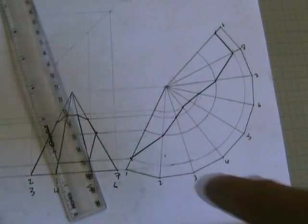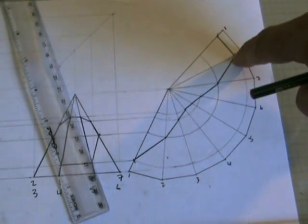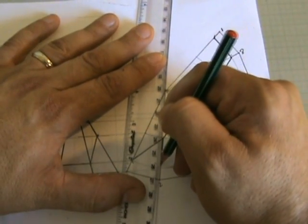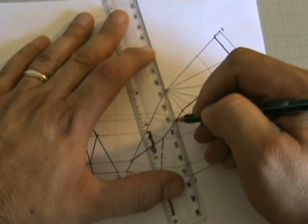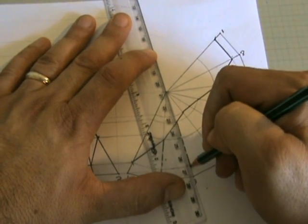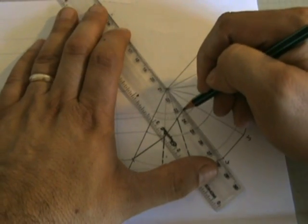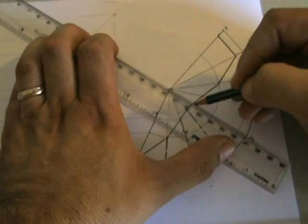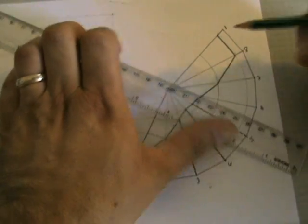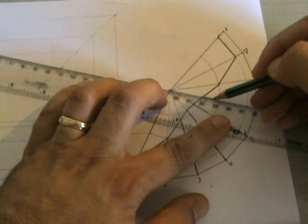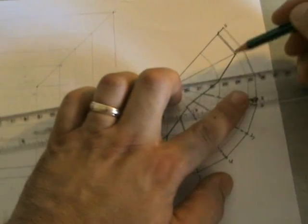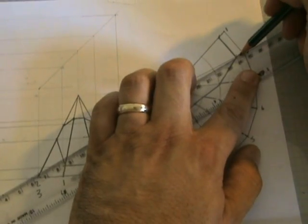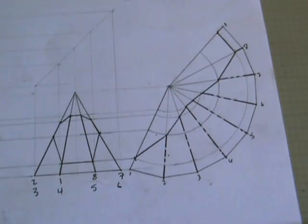And again, join the dots with straight lines. That's the development. Now each of these edges should be a fold line. A fold line, as we did before, is one line with two edges, with two shorter lines dashed in between.